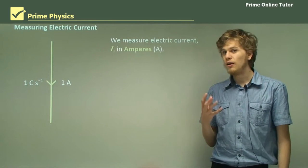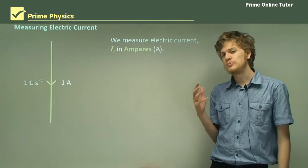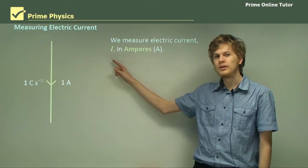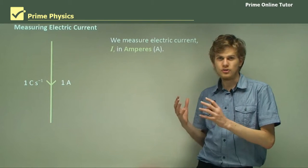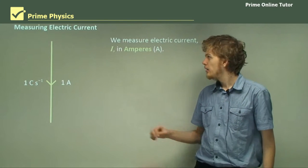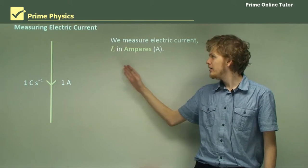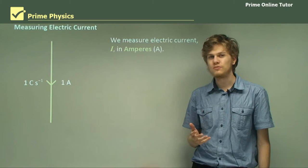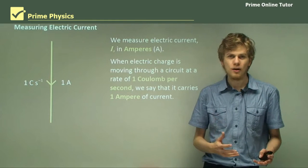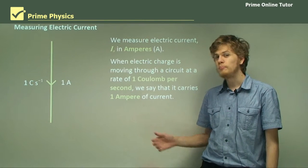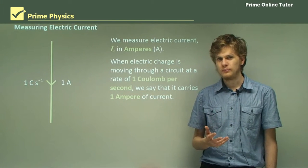We measure electric current — that is the movement of the charged particles — in amperes. Algebraically, we represent it with an uppercase I. So charge is lowercase q and it's measured in coulombs. And current, that's the flow of charge, is measured with uppercase I in amperes, or sometimes just amps for short. When an electric charge is moving through a wire at a rate of exactly one coulomb per second, this is what we call one ampere, or one amp.